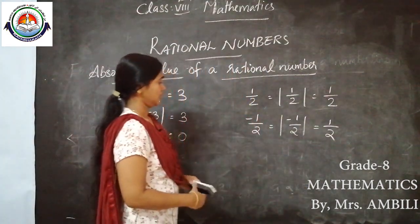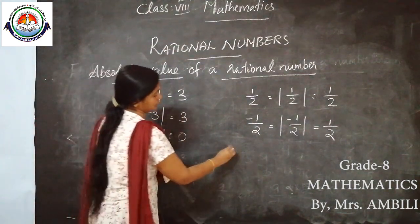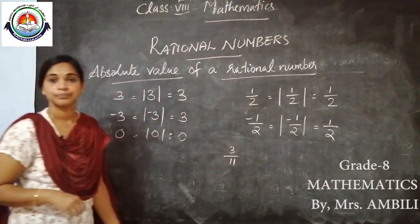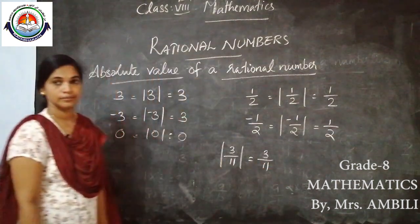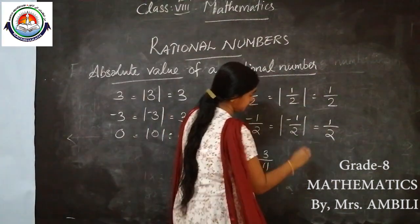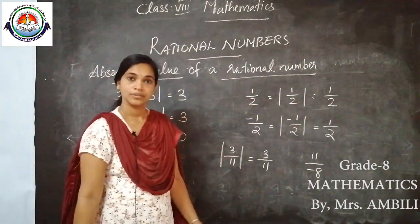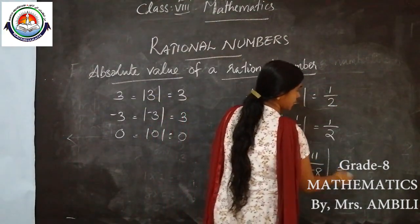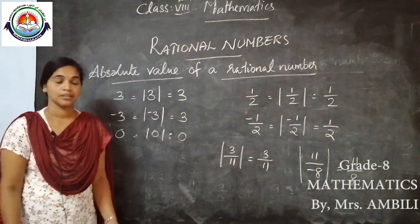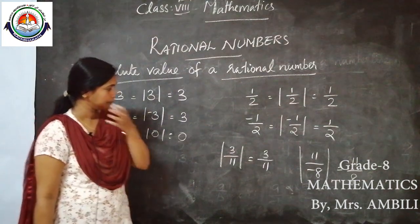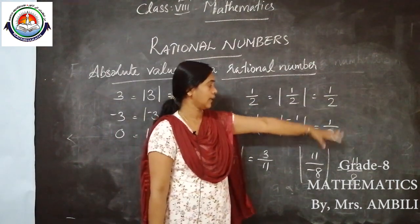So what is the absolute value of 3/11? |3/11| = 3/11. What is the absolute value of 11/(−8)? The absolute value of 11/(−8) equals 11/8.